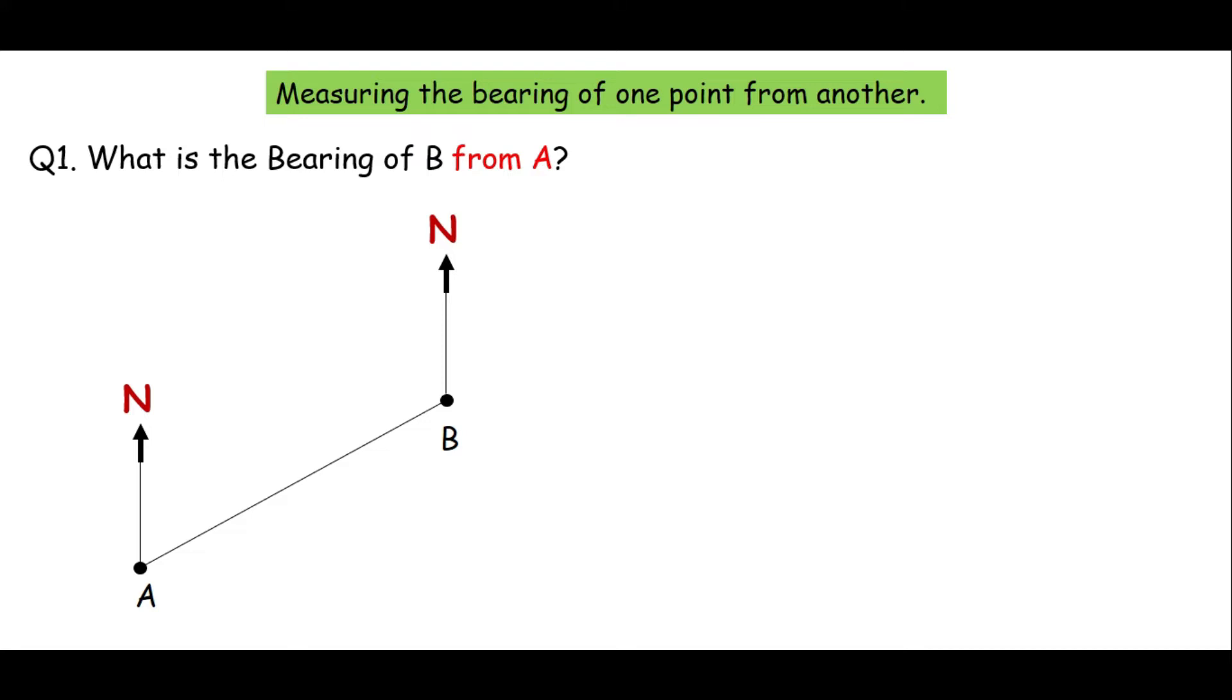Now you are asked to find the bearing of B from A. So always remember it is a second word, bearing of B from A. So that means you start measuring the angle from A. So you have the point A here. You take the north from the north you measure the angle, you keep moving till it touches the line segment AB. So you are talking about this angle theta which is the bearing of B from A. So you can see it is 070. So the answer here is going to be 70 degree.